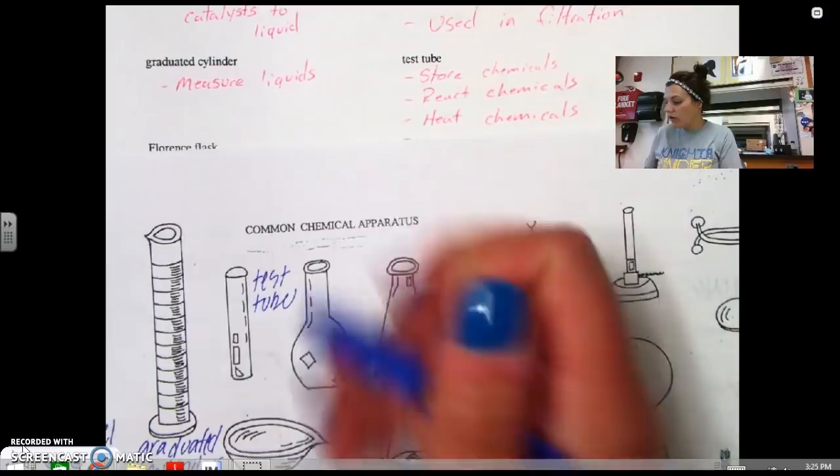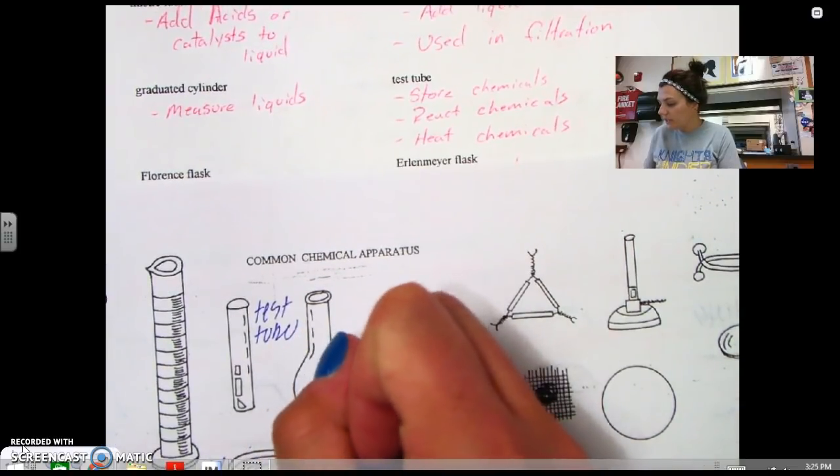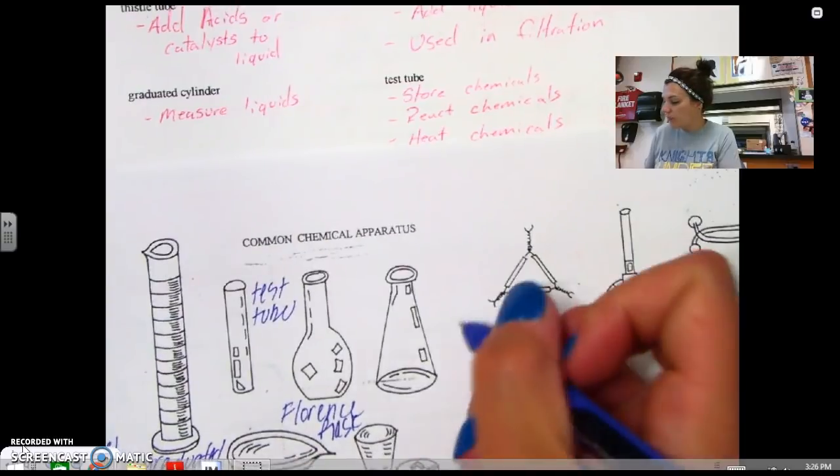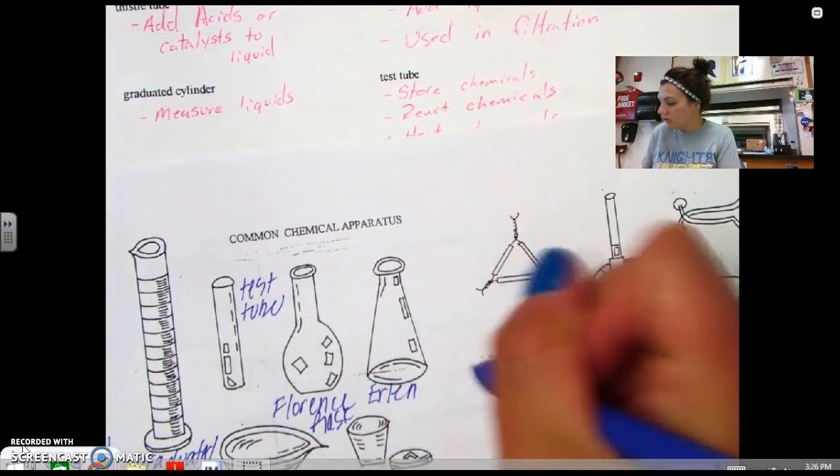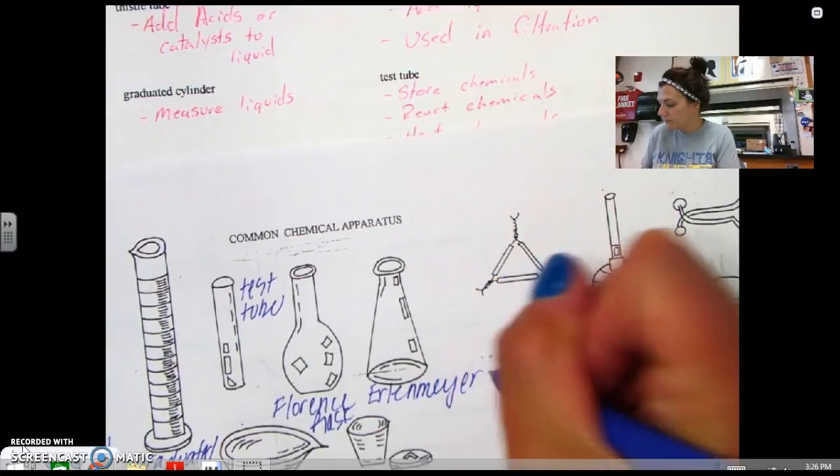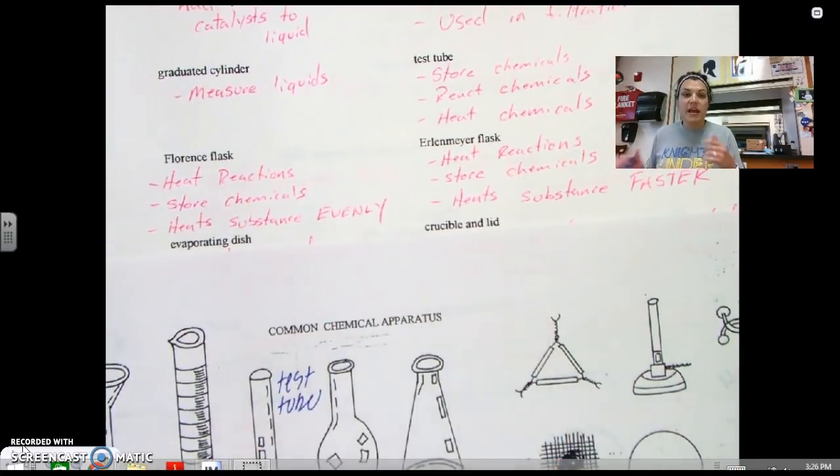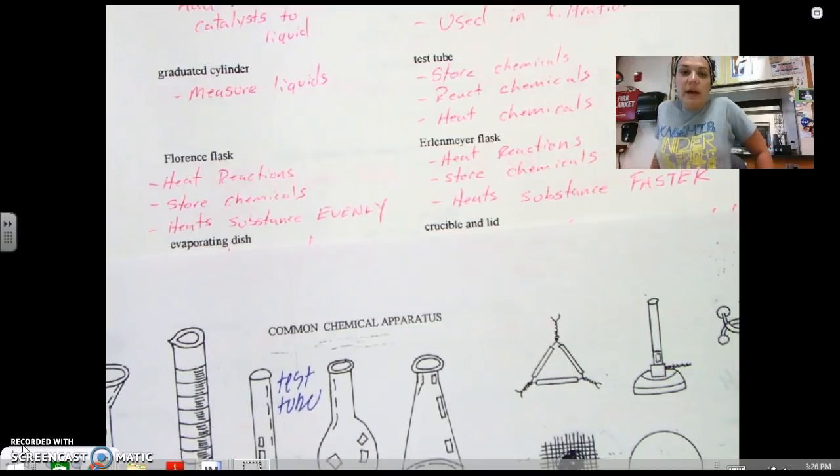The next thing that we have is this thing called a Florence flask. So it's named after some guy. And we don't use these a lot, but sometimes I will store chemicals inside of them. You'll see that this is a kind of a round type flask. They're used primarily to evaporate things off. But you probably won't see one of these again until you take organic chemistry. After the Florence flask, the Florence flask heats reactions, stores chemicals, and it also heats substances evenly.